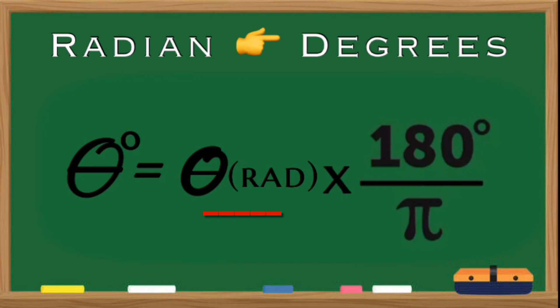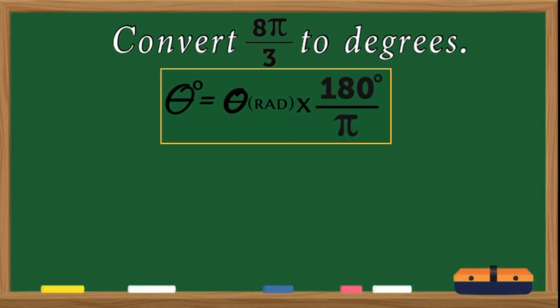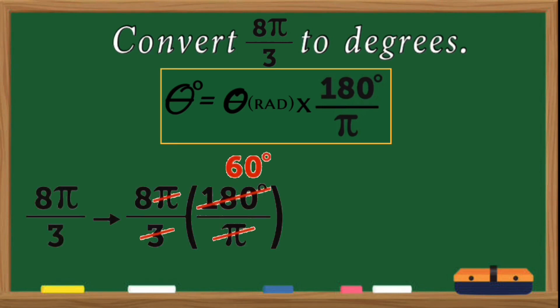Now, if the given angle is expressed in radian and you are being asked to convert it to degree measure, the formula is the product of the given angle in radian and 180 over pi. For example, we are going to convert 8 pi over 3 to degrees. To convert it, multiply 8 pi over 3 by 180 over pi. Pi divided by pi equals 1, so simply cancel it out, and 180 divided by 3 is equal to 60. What is left now is 8 times 60.